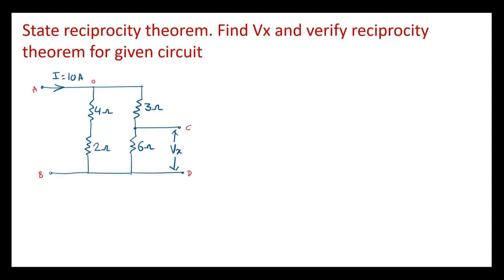As current I is flowing, at this node the current will divide. Part of the current will flow through this — I will call it I1 — and part of the current will flow through this — I will call it I2. So here I1 is the current which flows through the 4 ohm resistor as well as the 2 ohm resistor. Here 4 and 2 are in series, so the equivalent resistance is 6 ohm.